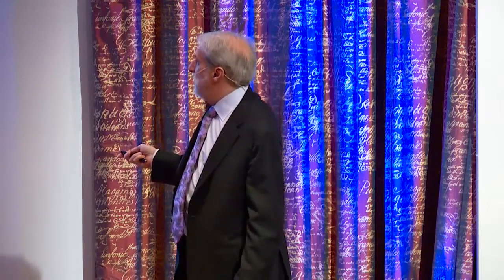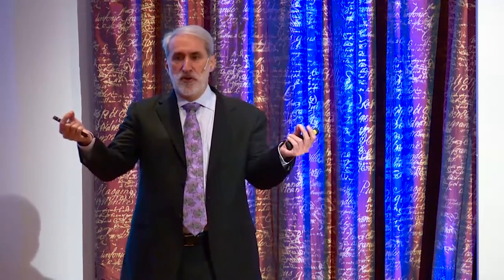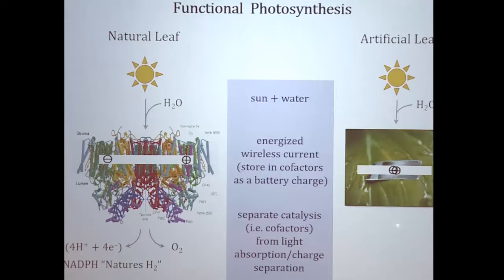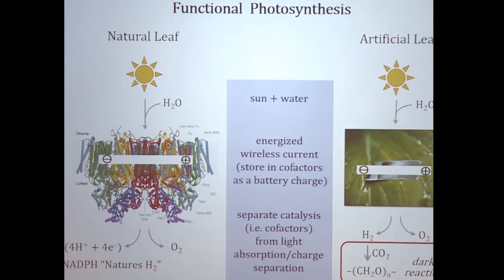It then stores the current in cofactors, the oxygen evolving complex and the iron reductase. The leaf takes four units of charge. And when it has four positive charges and four negative charges, it raises the energy of the cofactor. And with those four units of charge, it then splits water to make oxygen and hydrogen. So our first task was, could we emulate this? And the way we're going to emulate it, it's not a biomimicry, it's only functionally. Could we take a material where we separate charge a unit at a time, times four, store that charge in catalysts, and then have the energized catalysts act on water to make oxygen and hydrogen.